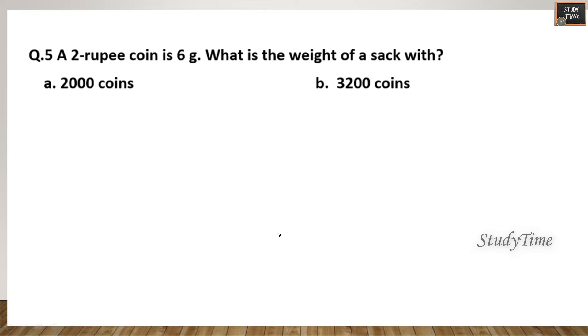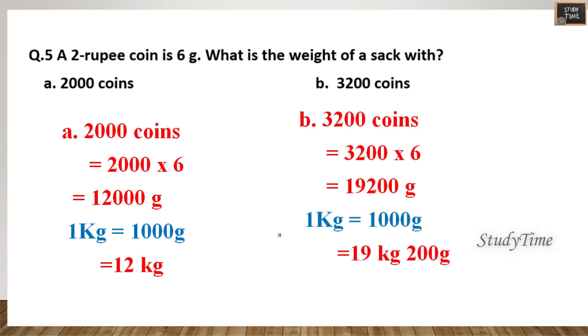Next, a two rupee coin is 6 grams. What is the weight of a sack with 2000 coins? So this is 2000 into 6 grams. The answer is 12,000 grams. So one kg equals thousand grams, so it is 12 kg. For 3200 coins you will be getting 19,200, that is 19 kg 200 grams.